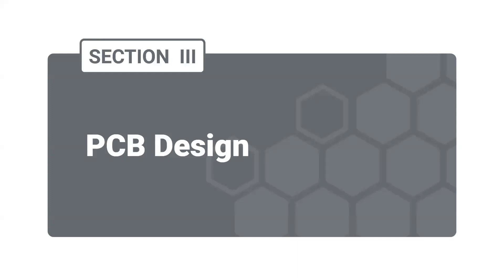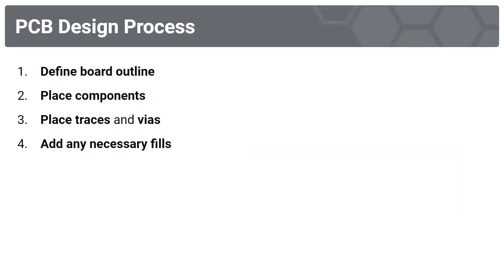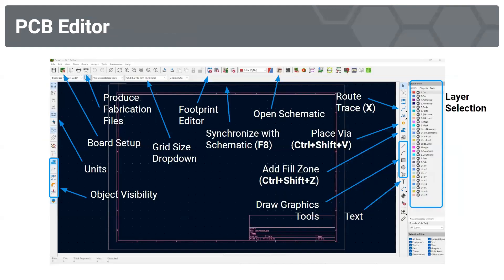Now we're going to get into the PCB design process. We have four steps today: first define our board outline, then place components, then place traces and vias, and finally add any necessary fills.